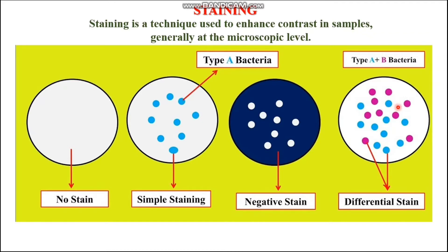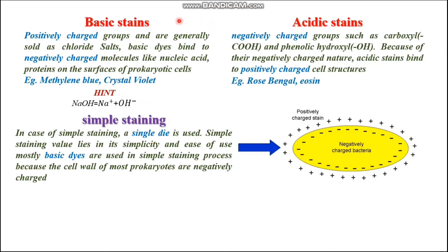Before talking about the types of stains used, we must know what is a basic stain and an acid stain. Basic stains contain positively charged groups and are generally sold as chloride salts. Basic dyes bind to negatively charged molecules like nucleic acids and proteins on the surface of prokaryotic cells. Examples of basic stains are methylene blue and crystal violet, and many more basic stains are also available in the market.